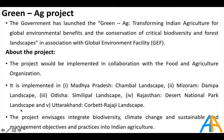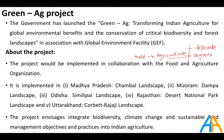The next topic is the Green Ag Project. Most people in India are still employed in agriculture, but people completing degrees are not treating agriculture as a proper profession. Because of that, government schemes are not reaching the intended beneficiaries. The government launched the Green Ag Project — 'green' means trying to transform Indian agriculture for global environmental benefits.